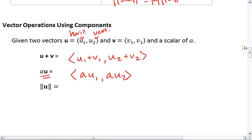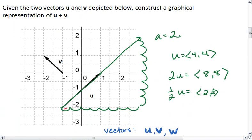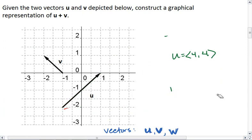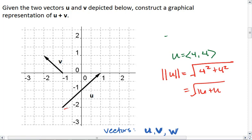And then lastly, you do need to make sure you know that the magnitude of u is determined by taking the square root of u1 squared plus u2 squared. So again, looking at our example above, the magnitude of u would be the square root of 4 squared plus 4 squared, which is the square root of 16 plus 16, which is the square root of 32.